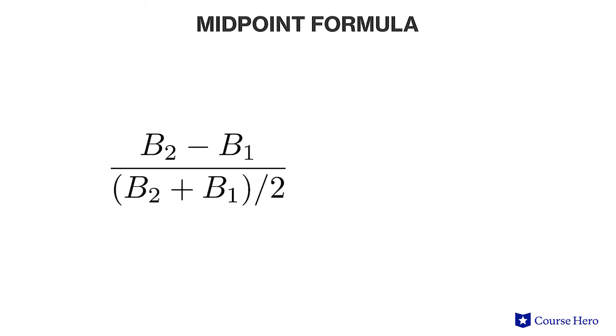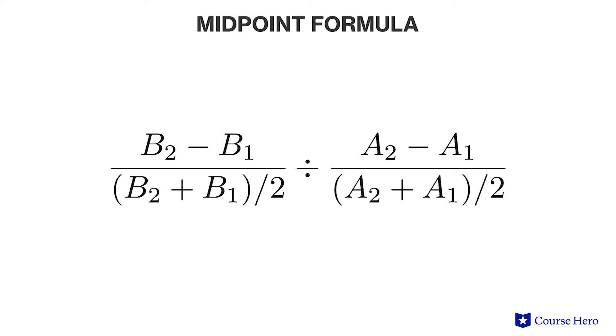The midpoint formula calculates the percentage change in a variable by dividing the change in the variable by the average of the initial and final values. Suppose the price of a t-shirt increases from $10 to $15, and this causes the quantity demanded to fall from 4,500 units to 3,500 units. To estimate the elasticity, the percentage changes in these variables must first be calculated.